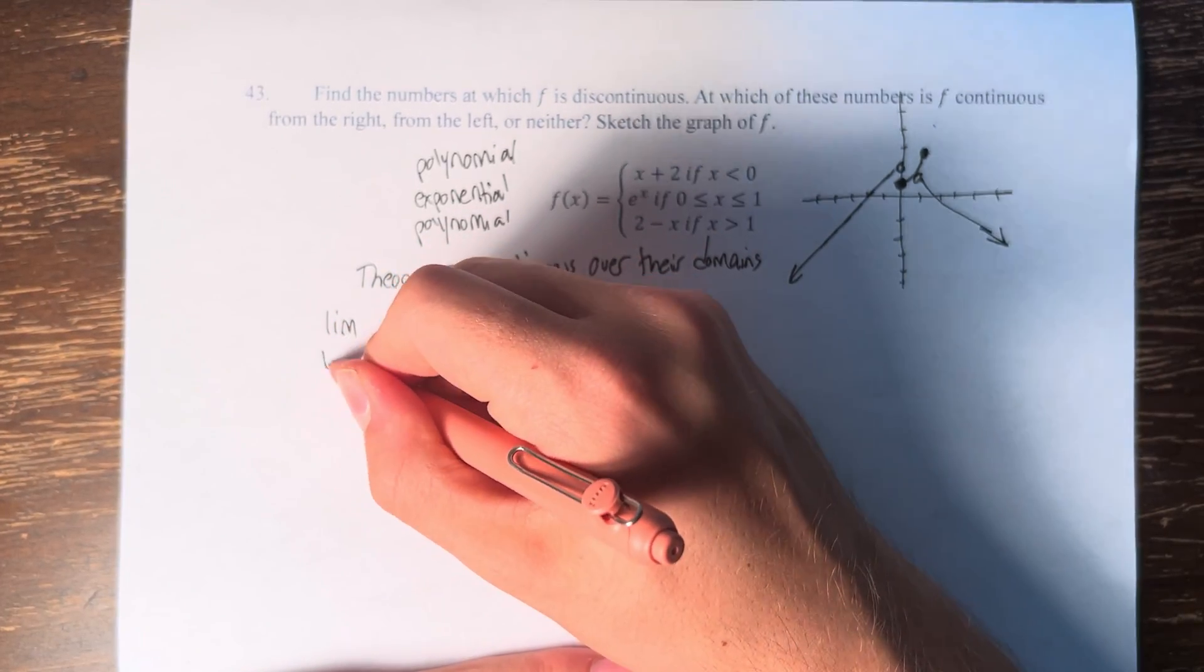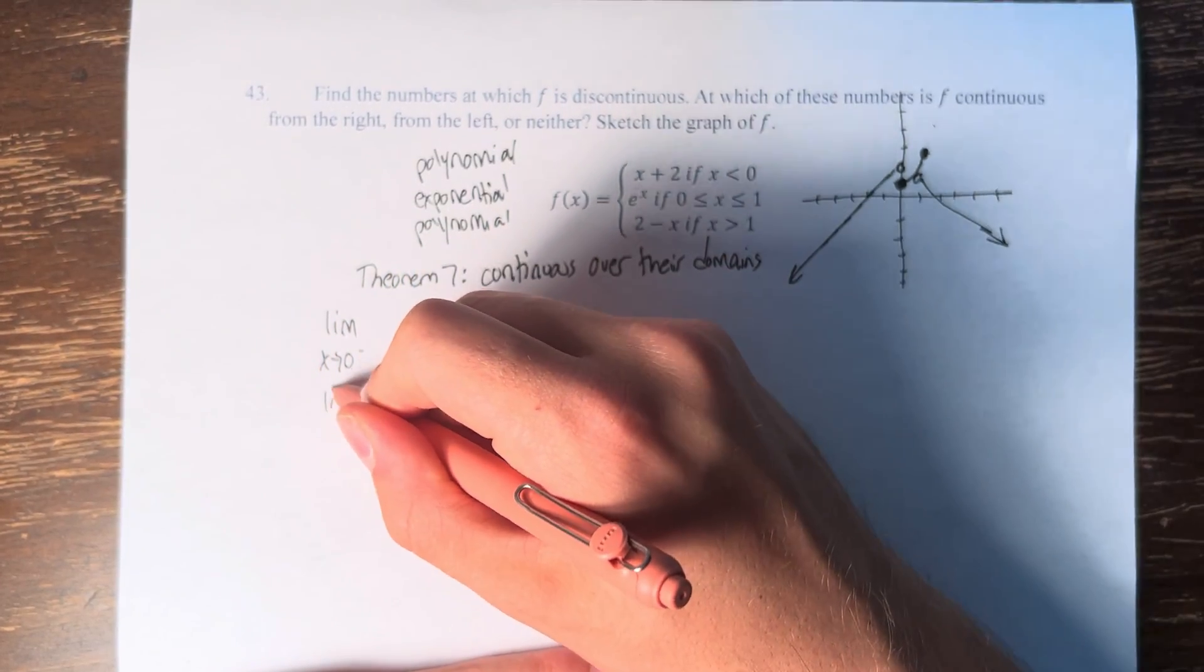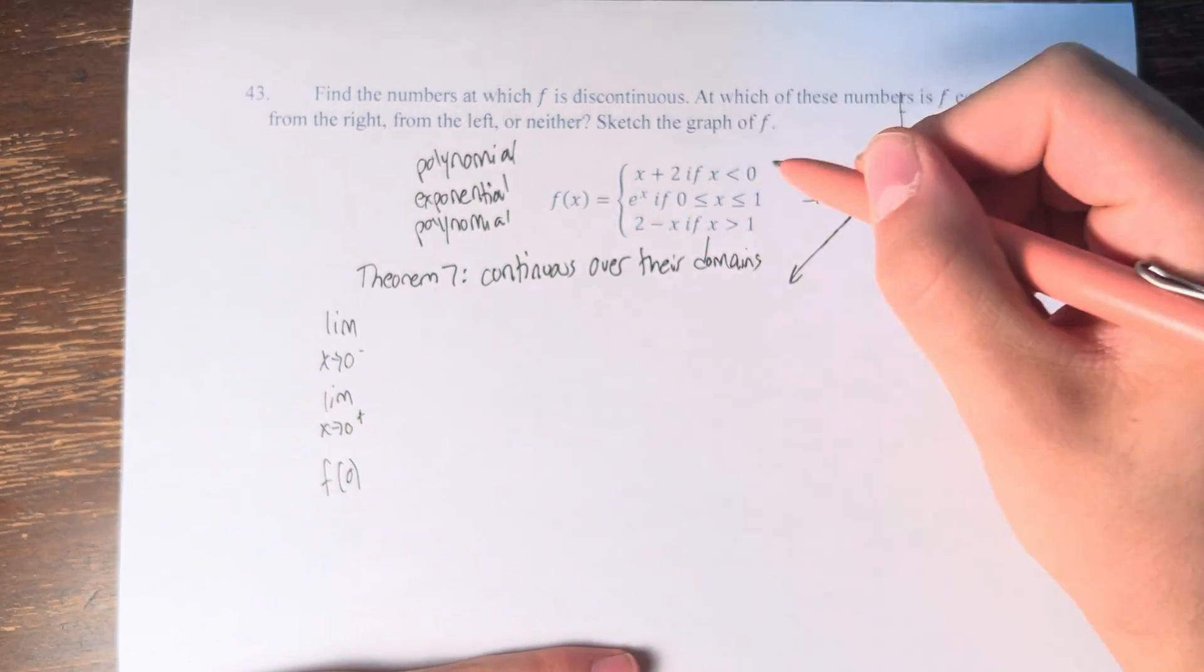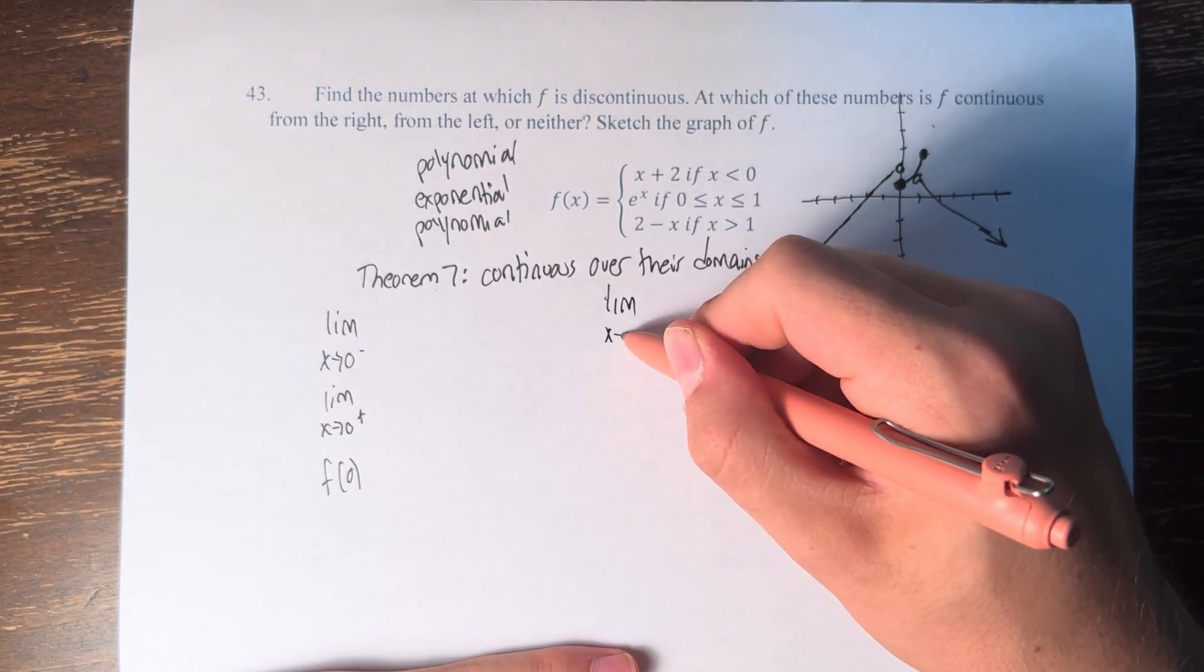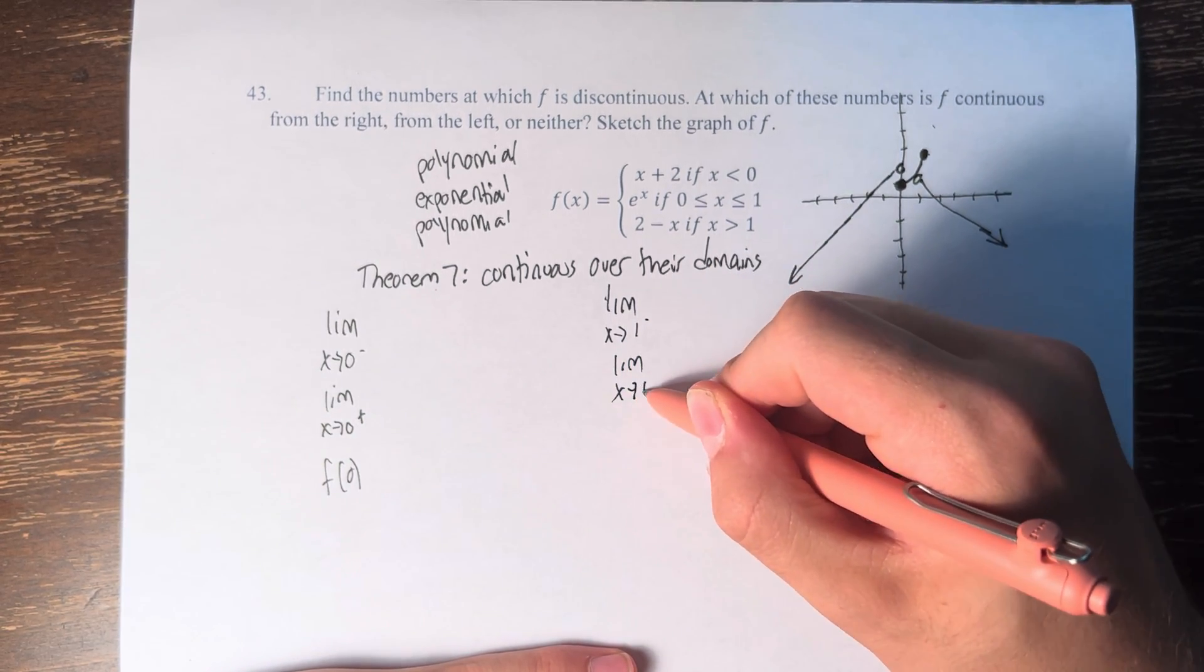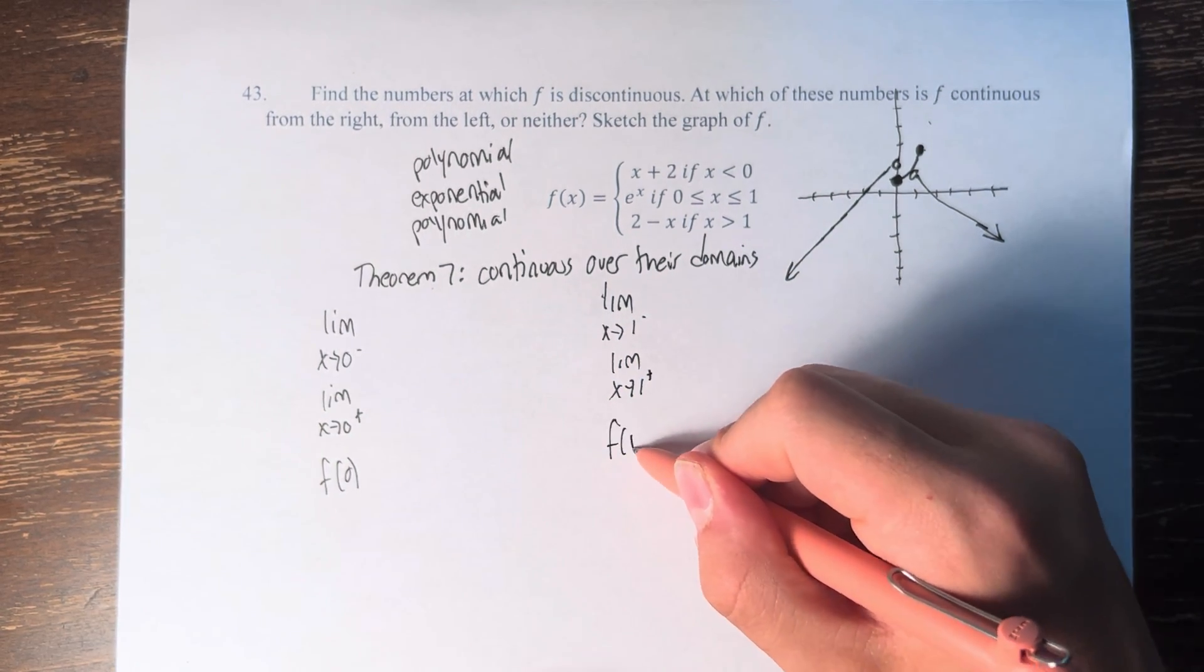So we have to check the limit as x approaches 0 from the left, from the right, and f of 0. And we have to check the limit as x approaches 1 from the left, 1 from the right, and f of 1.